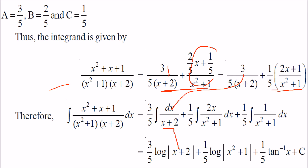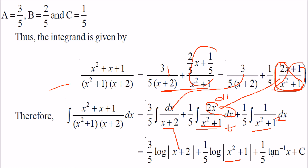Once A, B, C are found, we can factor out constants and split the quadratic part: (2x+1)/(x²+1) = 2x/(x²+1) + 1/(x²+1). The integral of log|x+2| comes from A/(x+2). For 2x/(x²+1), substituting t = x²+1 gives dt = 2x dx, so the integral is log(x²+1). The integral of 1/(x²+1) is tan⁻¹(x) since a = 1. This completes the solution.